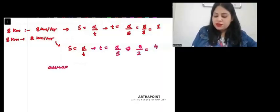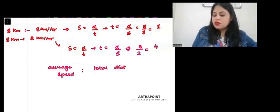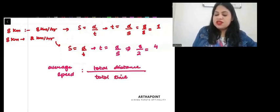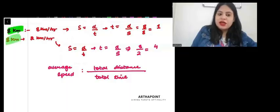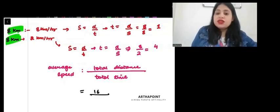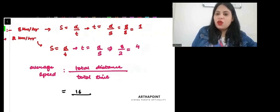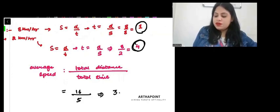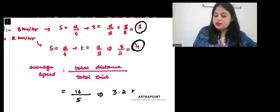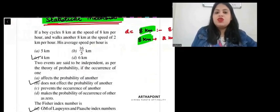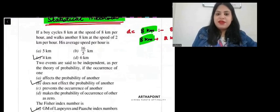Now, average speed will be total distance by total time. The total distance is 8 km here and 8 here. So, total distance covered is 16 km. Total time he is taking is 1 hour here and 4 hours here, so 5 hours. So, this will be 3.2 km per hour, which is your average speed. So, 16 by 5, answer should be B.